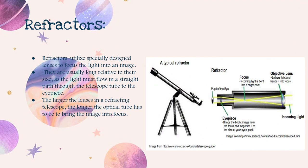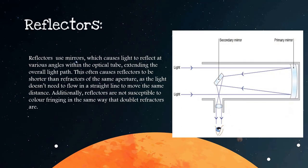Refractors use lenses; their length is longer relative to their size — the larger the lens, the longer the optical tube needs to be to bring the image into focus. Reflectors use mirrors, which cause light to be reflected at various angles inside the optical tube, increasing the overall light path. This makes reflectors shorter than refractors of the same aperture, because light does not need to travel in a straight line to cover the same distance.